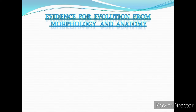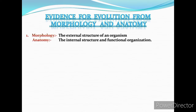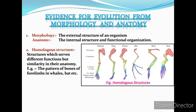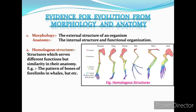First, Evidence for Evolution from Morphology and Anatomy. Morphology refers to the external structure of an organism and anatomy refers to the internal structure and functional organization. Homologous structures are those structures where different organisms have similarity in their anatomical structure but perform different functions.